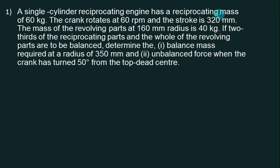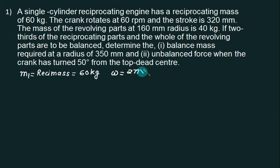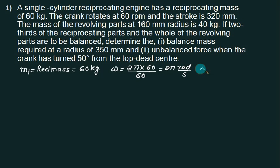A single-cylinder reciprocating engine has a reciprocating mass M1 of 60 kg. The crank rotates at 60 rpm, so omega equals 2π × 60/60 = 2π radians per second. The stroke is 320 mm, so the crank radius is 160 mm — half of the stroke. The mass of the revolving part at 160 mm radius is M2, the revolving mass, equal to 40 kg.